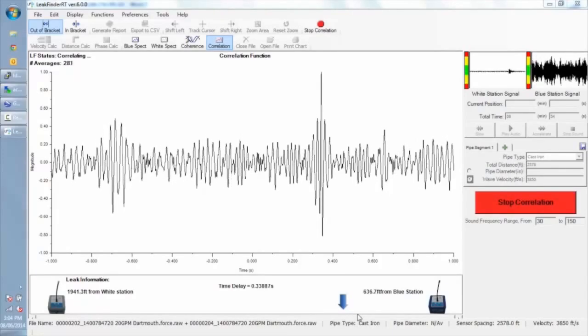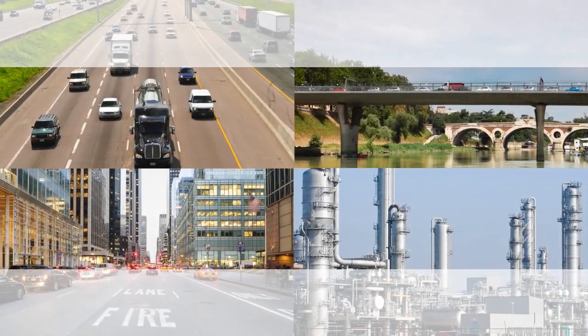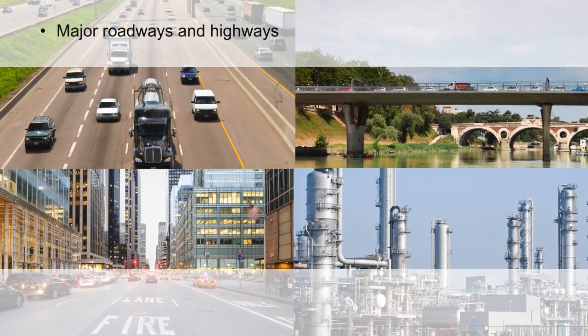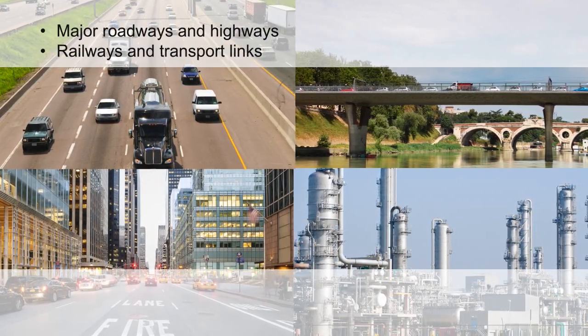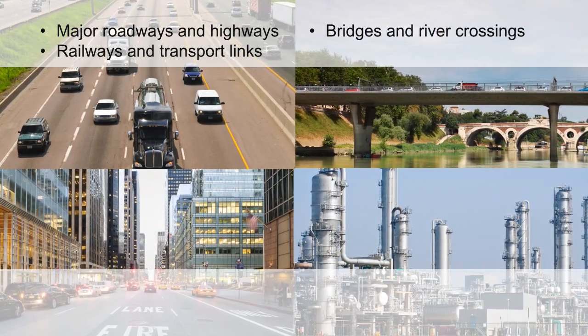EchoShore nodes can be installed virtually anywhere to provide monitoring of critical transmission main assets: major roadways and highways, railways and transport links, bridges and river crossings, high economic impact sites, government buildings, tourism districts, financial districts, and industrial zones.